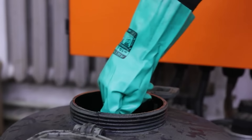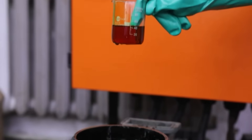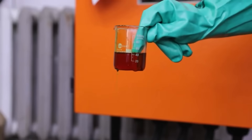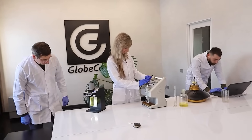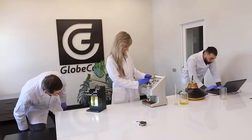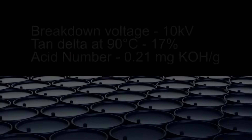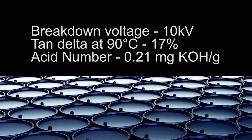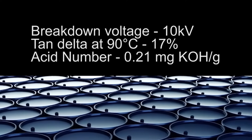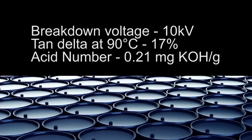Now we will consider the correct and full cycle of used transformer oil regeneration. At the first stage, oil samples are taken from storage tanks. After analyzing the samples of used transformer oils in the laboratory, we obtained the following results.